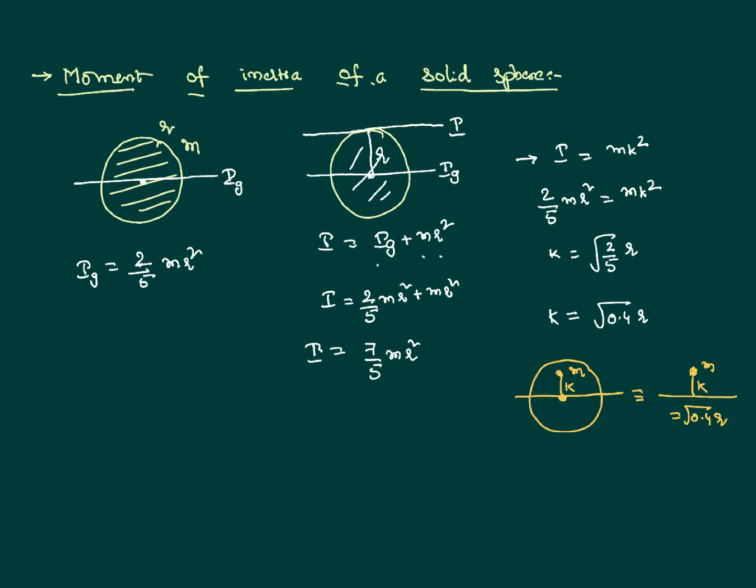This is equivalent to a particle of mass M rotating about a given axis at this distance called the radius of gyration. The radius of gyration is a simple way of expressing the moment of inertia. Thank you.